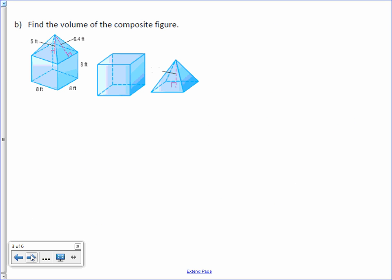Letter B: find the volume of the composite figure. We have two shapes making up this figure — a rectangular prism and a square pyramid. The dimensions of the rectangular prism are 8, 8, and 8, which makes it a cube because all dimensions are the same. But we still find the volume the same way.